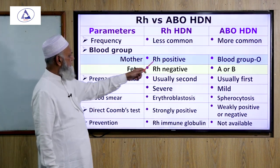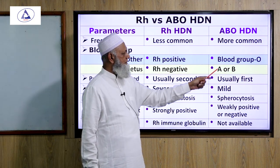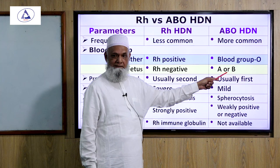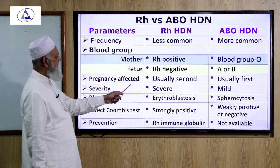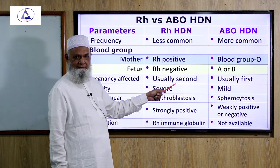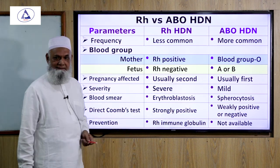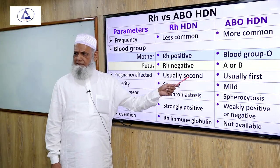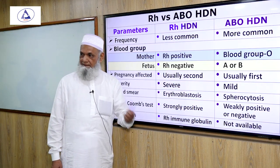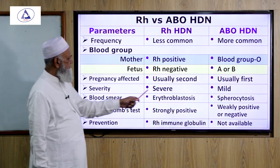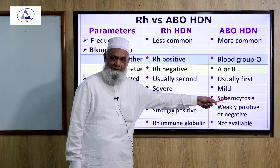For blood groups: in Rh incompatibility, the mother is Rh-positive and fetus is Rh-negative; in ABO incompatibility, mother is blood group O and fetus is A or B. Regarding pregnancy affected: Rh incompatibility usually affects the second pregnancy due to secondary IgG immune response, while ABO incompatibility usually affects the first pregnancy. Severity: Rh incompatibility is very severe; ABO incompatibility is mild and most cases do not require treatment.